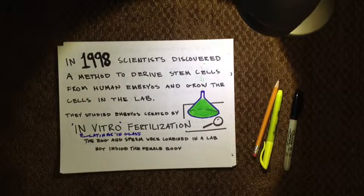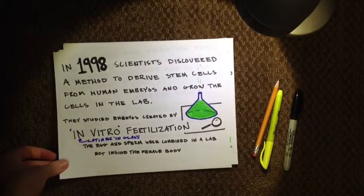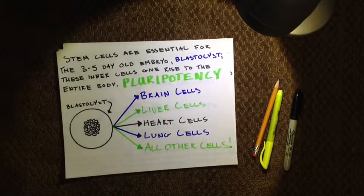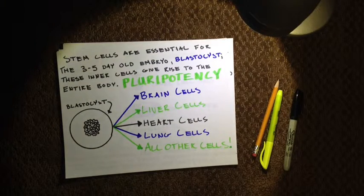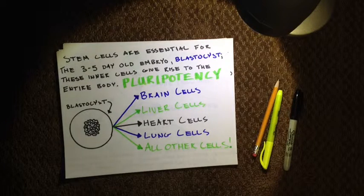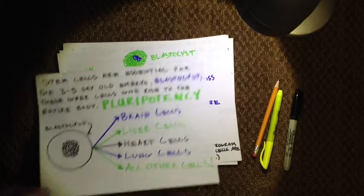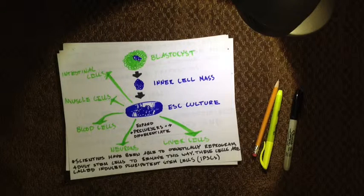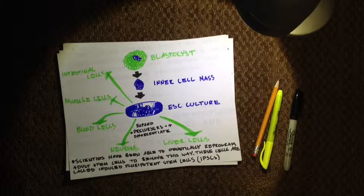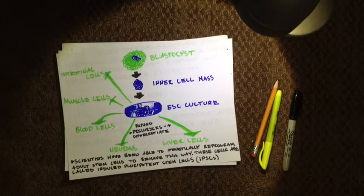The egg and sperm were combined in a lab, not inside the female body. Stem cells are essential for the three to five day old embryo, the blastocyst. These inner cells give rise to the entire body — this is a display of their pluripotency. Starting from the blastocyst, this diagram demonstrates how the inner cell mass is extracted and formed into an embryonic stem cell culture.